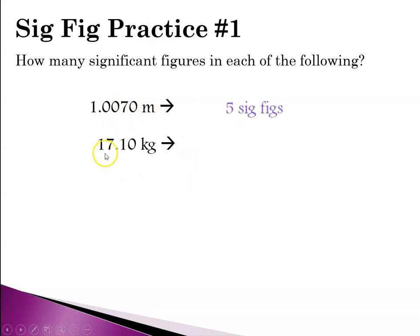The second number, 17.10, has a trailing zero and the number contains a decimal. So that gives us 4 sig figs.